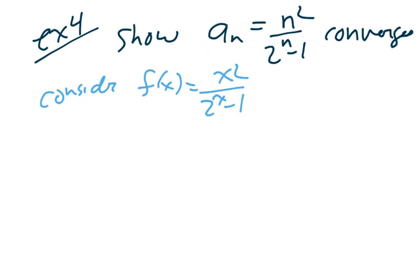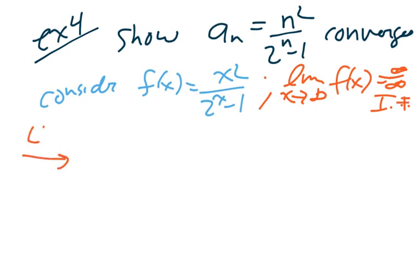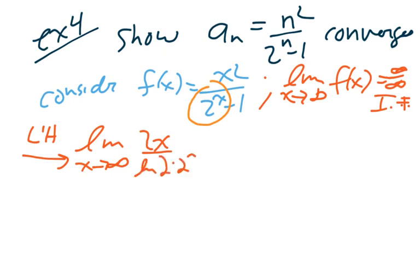Okay, in the last chapter, we learned how to do L'Hopital on this. So, this limit, the limit as x goes to infinity of f of x turns out to be infinity over infinity. So, that's indeterminate form, and therefore, we can L'Hopital. And so by L'Hopital, the limit as x goes to infinity of 2x over, the derivative of 2 to the x. So, remember that one, that is log of 2, natural log of 2, times 2 to the x, and of course, the derivative of negative 1 is just 0.